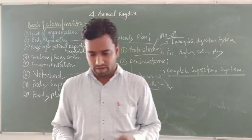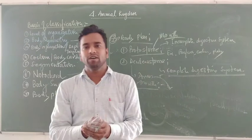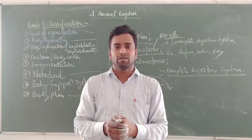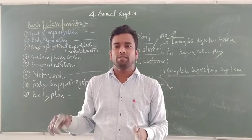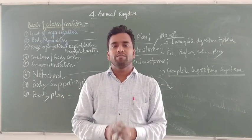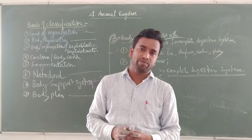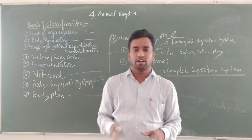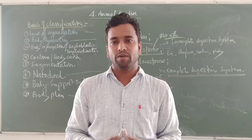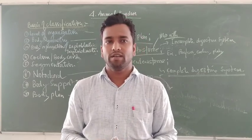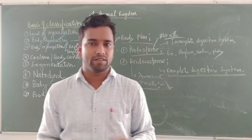Students, in this class we have studied the general terminology - what parameters are considered for the detailed study of animals. In the next class, I will discuss the classification of animals one by one: phylum Porifera, Coelenterata, Platyhelminthes, Aschelminthes, Ctenophora, Annelida, Mollusca, Arthropoda, Echinodermata, then Urochordata, Cephalochordata, Pisces, Amphibia, Reptilia, Aves, and Mammalia. This is a very long and interesting chapter requiring up to seven to eight parts. Thank you.